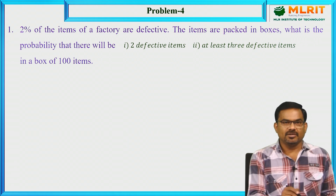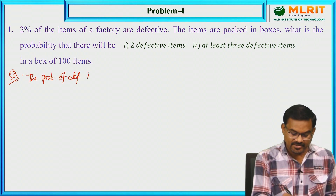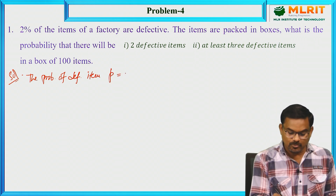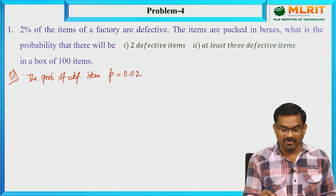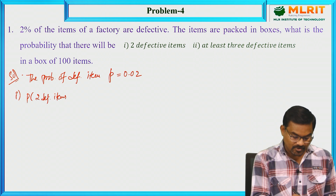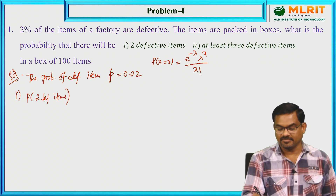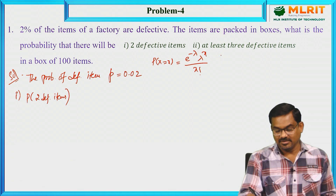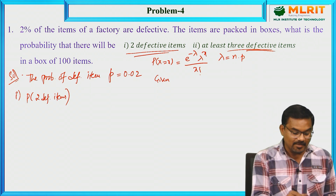The next problem: 2% of the items of a factory are defective, so the probability of a defective item p = 0.02. The items are packed in boxes. Find the probability that there will be two defective items and at least three defective items in a box of 100 items.